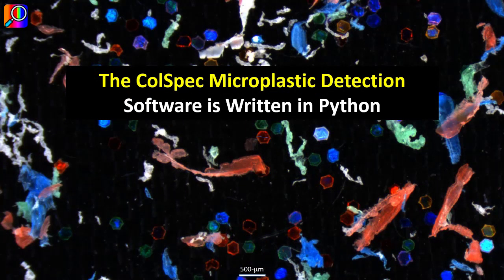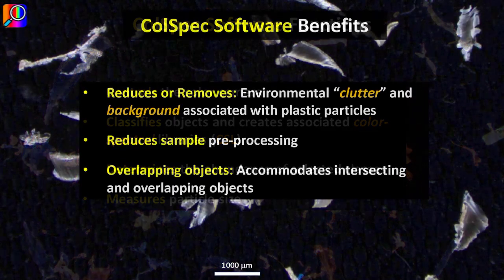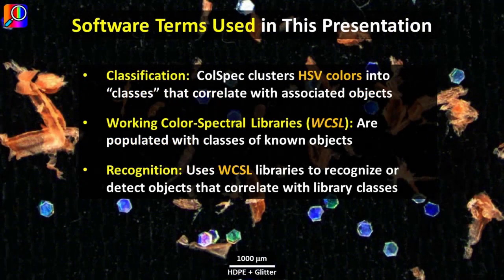The Kohlspec software is written in Python and controls the camera, classifies objects, creates color spectral libraries, measures particle sizes, and determines the abundance of selected classes. The benefits of the Kohlspec software include reduction or removal of clutter and background, reduces sample pre-processing, and accommodates intersecting and overlapping objects.